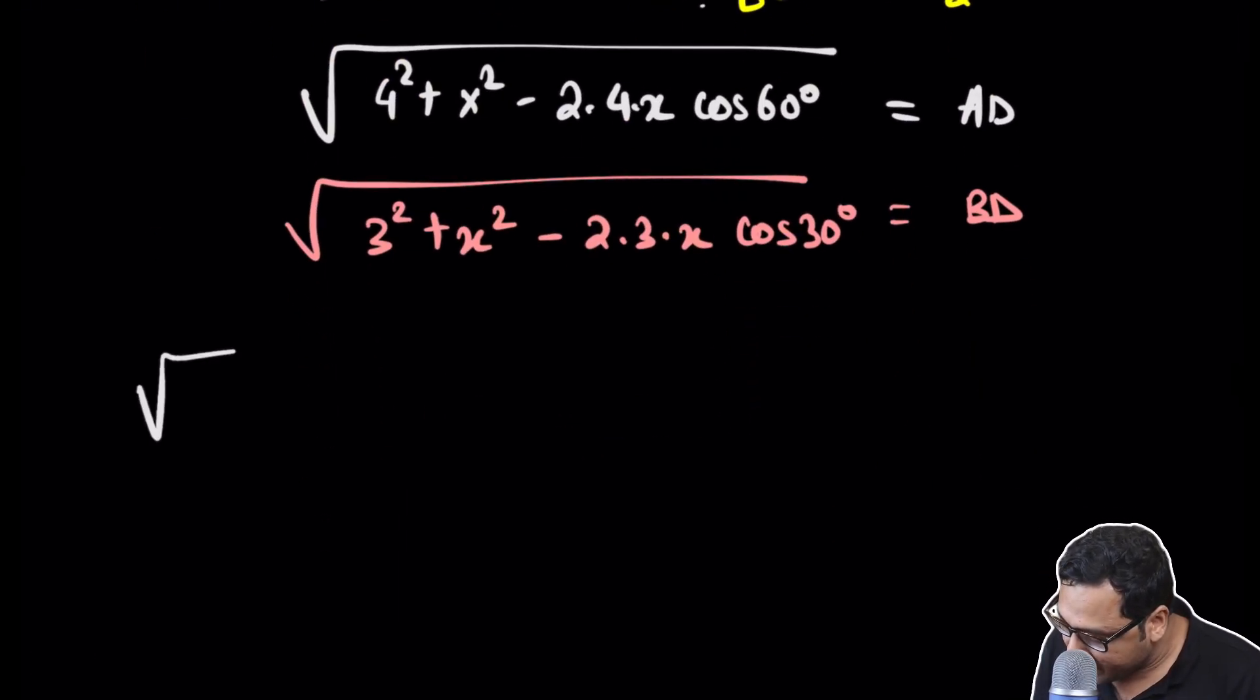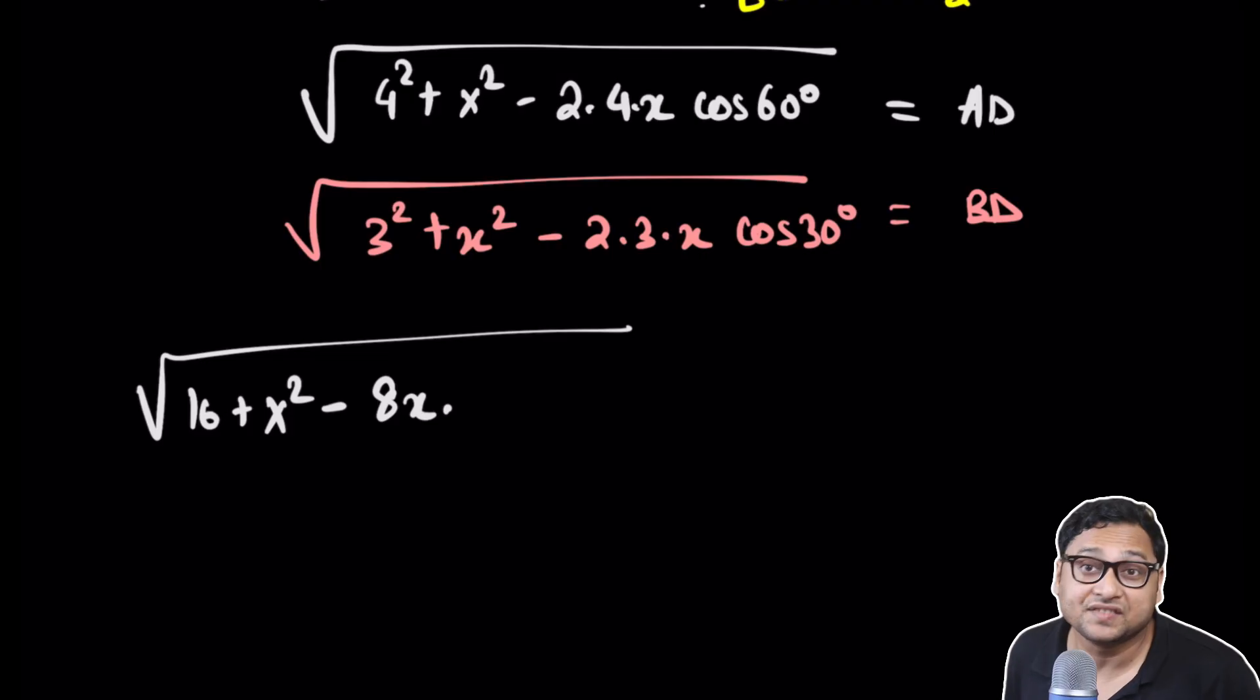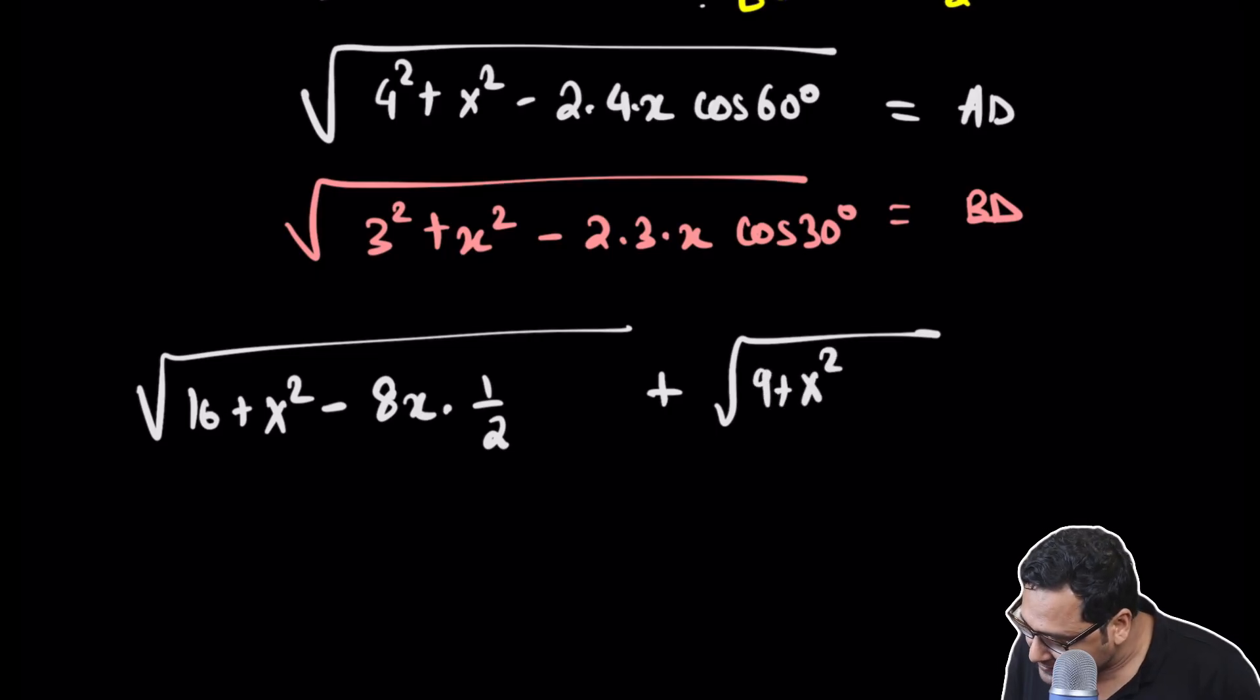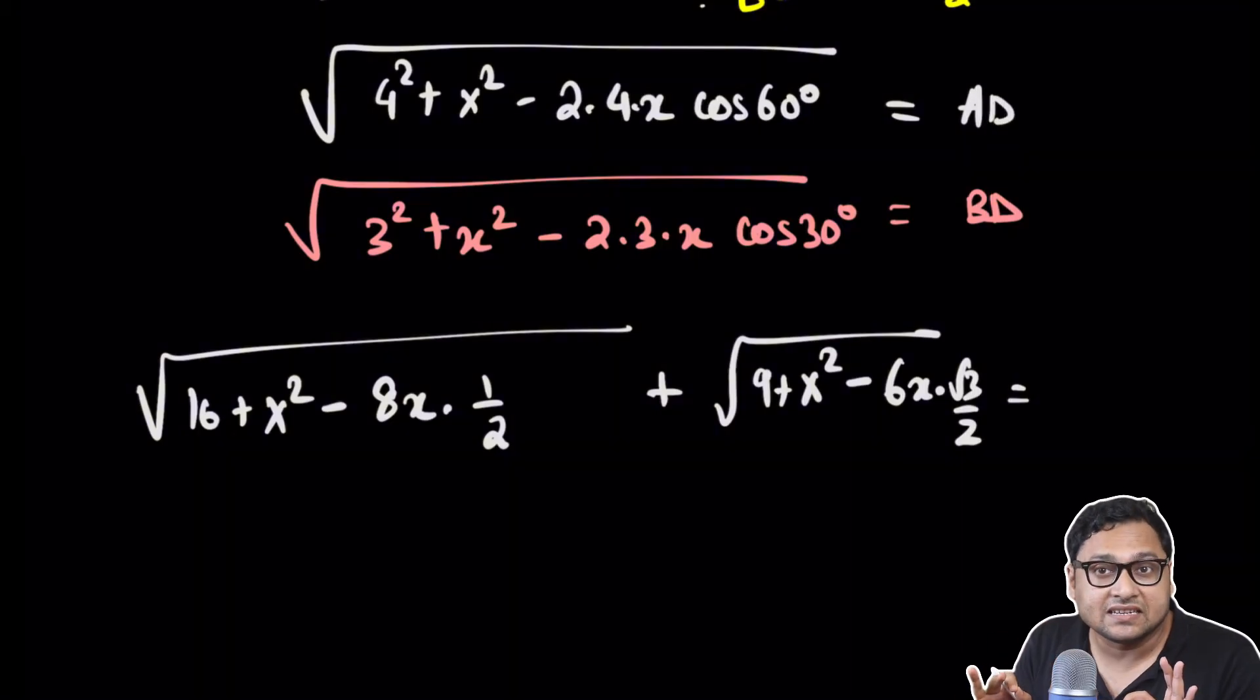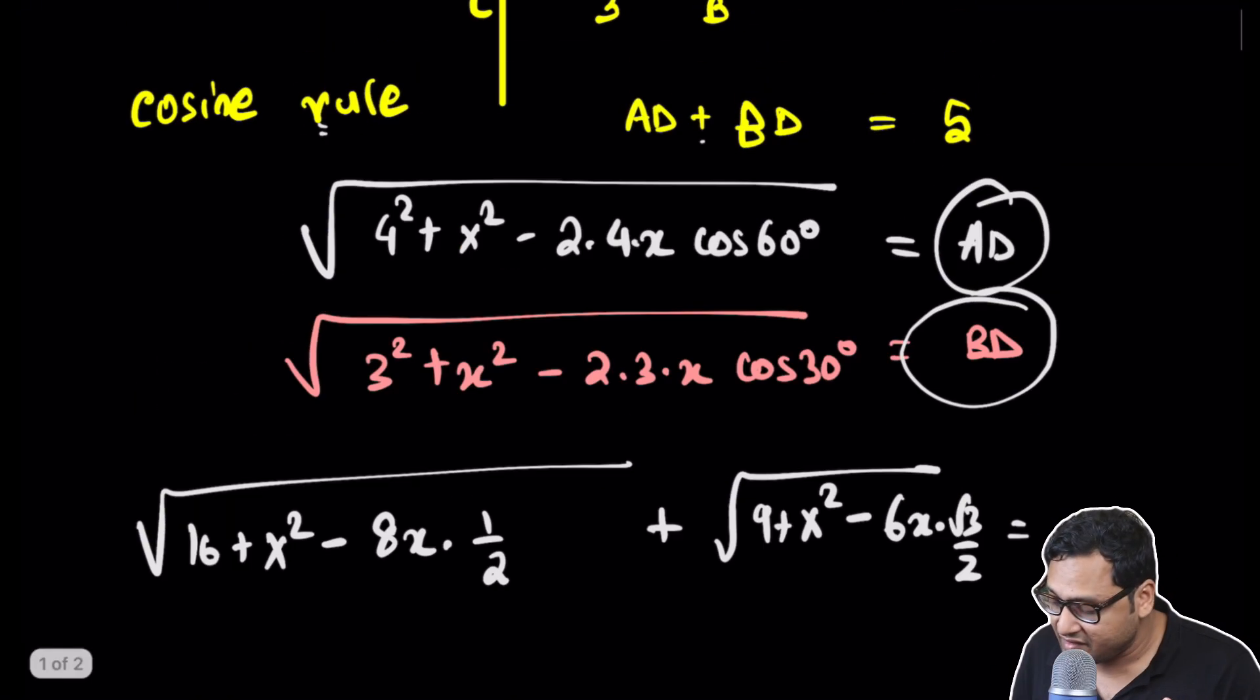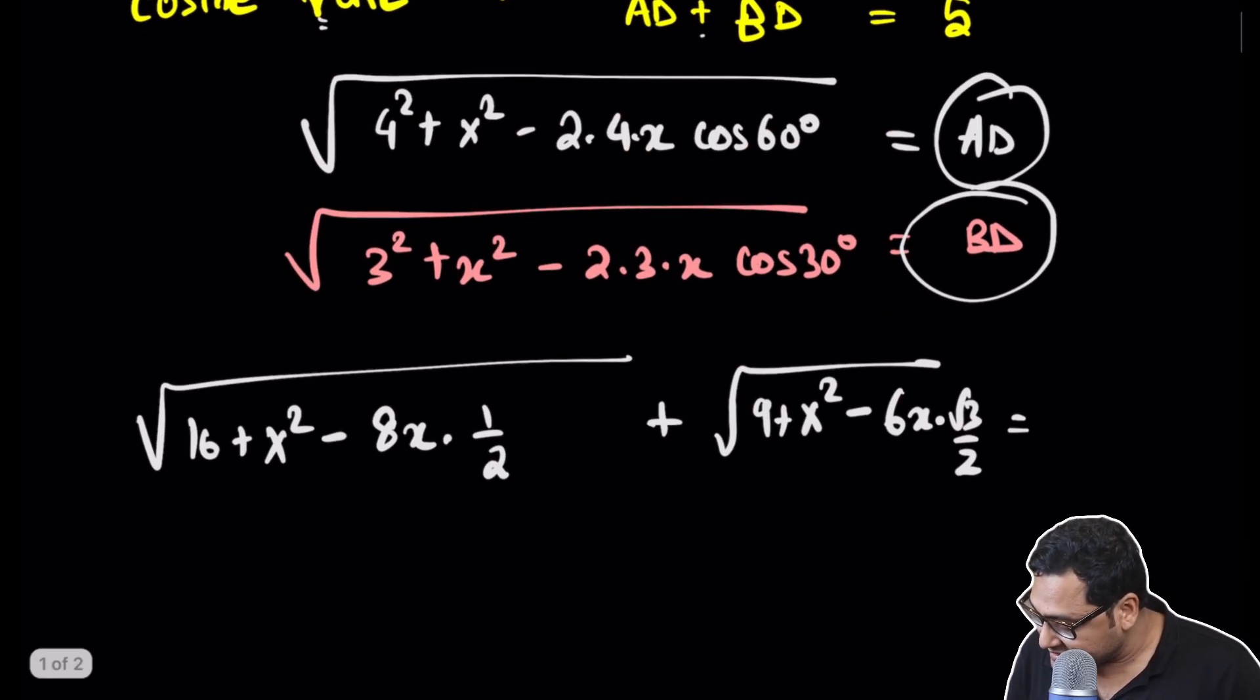We have square root of 16 plus X squared minus 8X times half (cosine of 60 degrees is half), plus square root of 9 plus X squared minus 6X times square root of 3 by 2 (cosine of 30 degrees). This is equal to AD plus BD, which is AB, and that is 5.